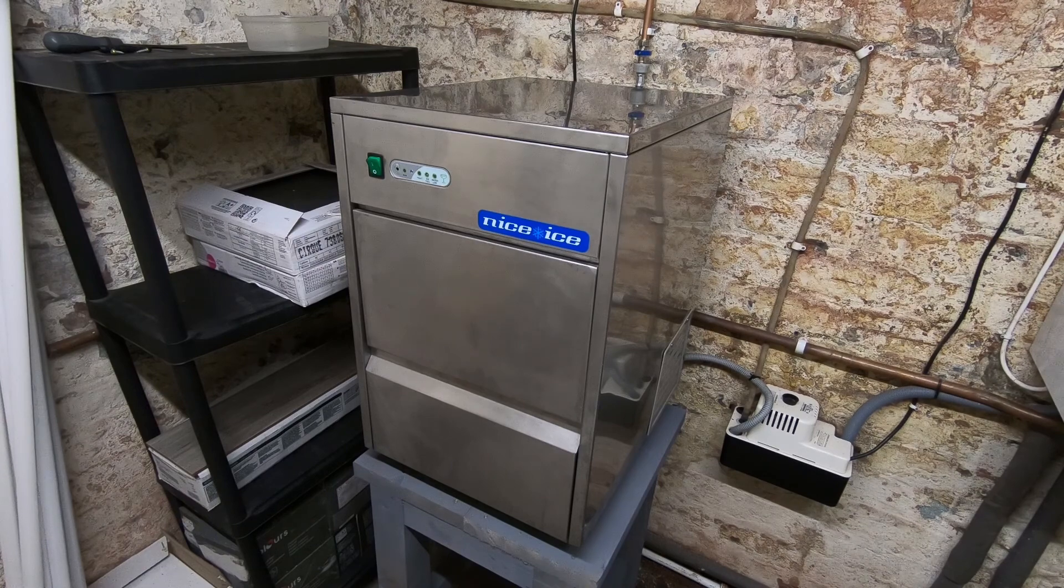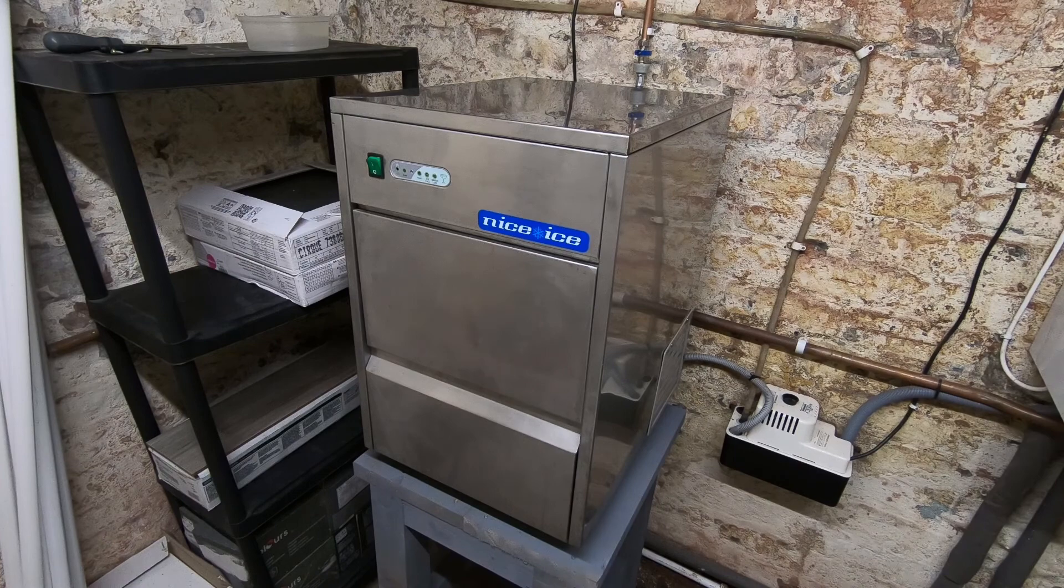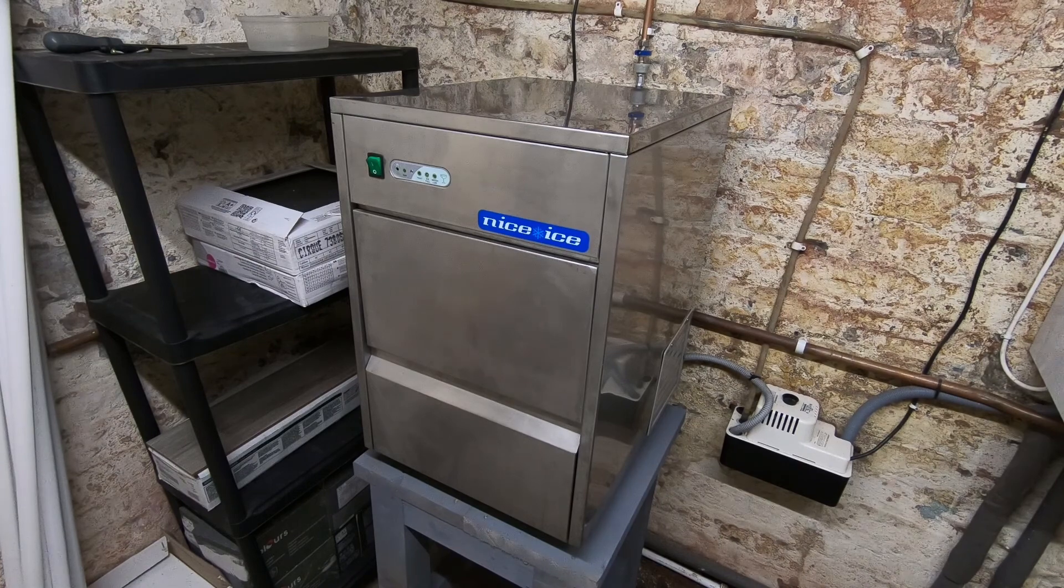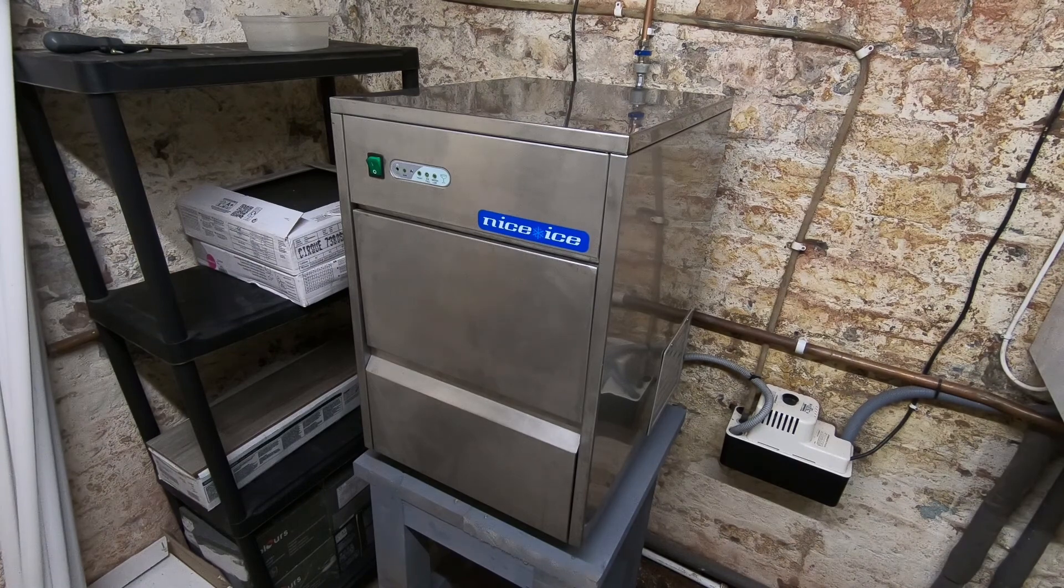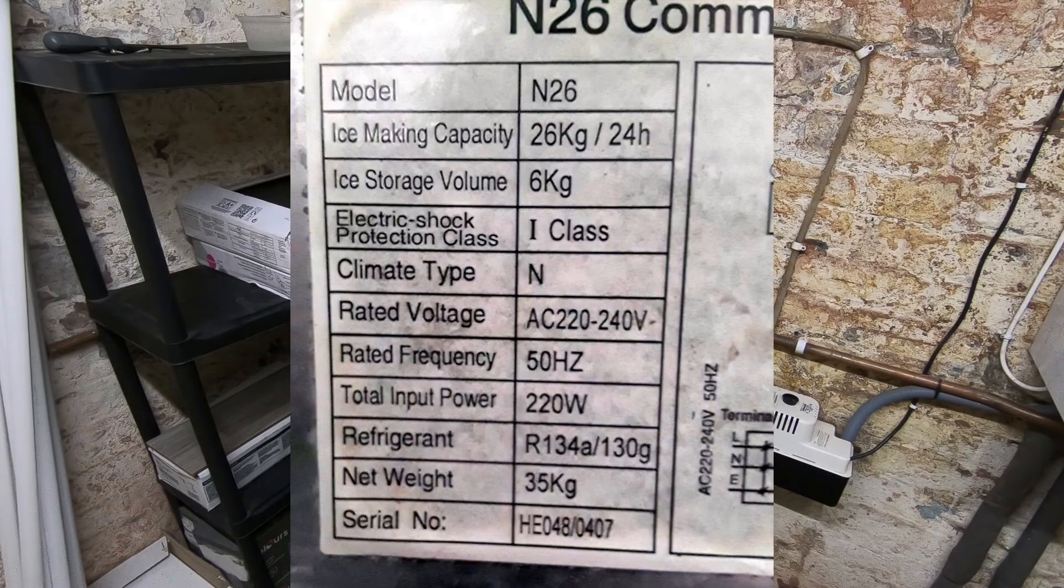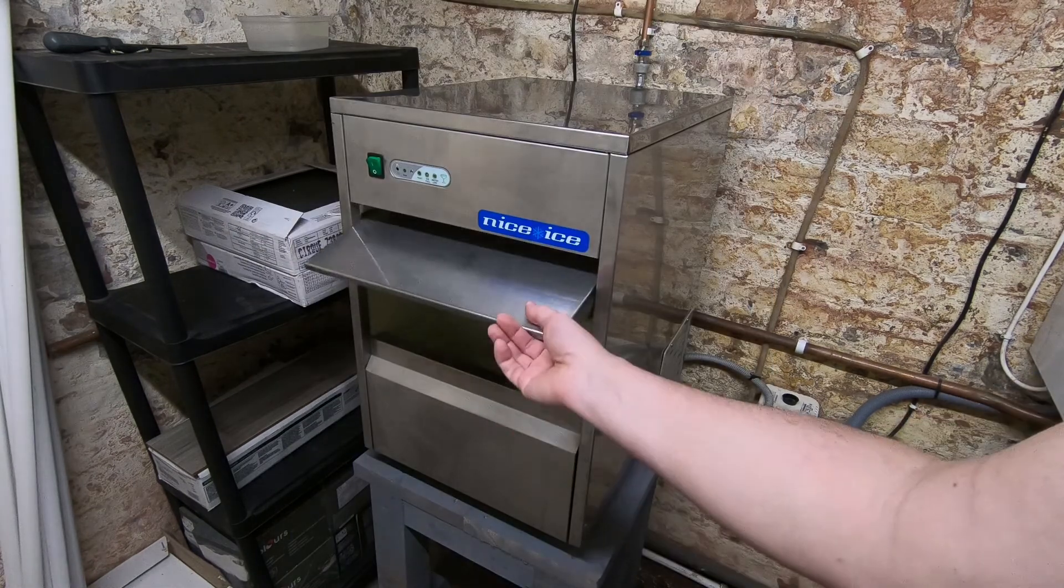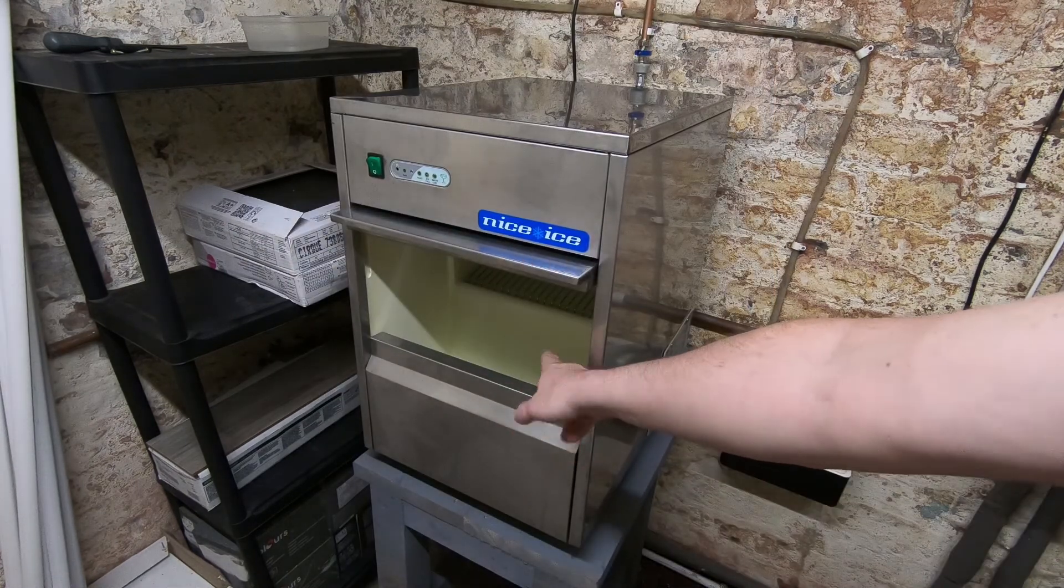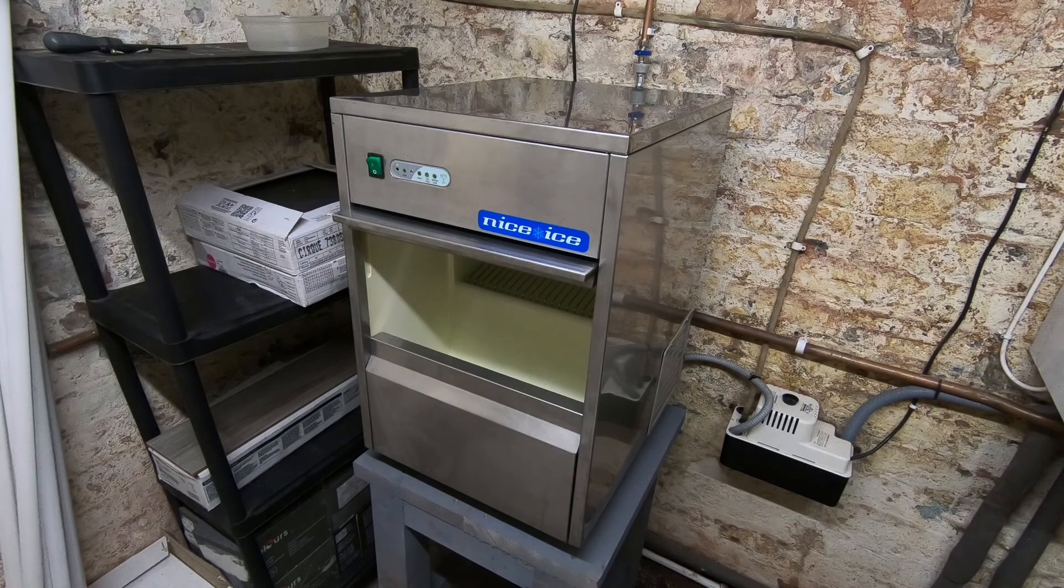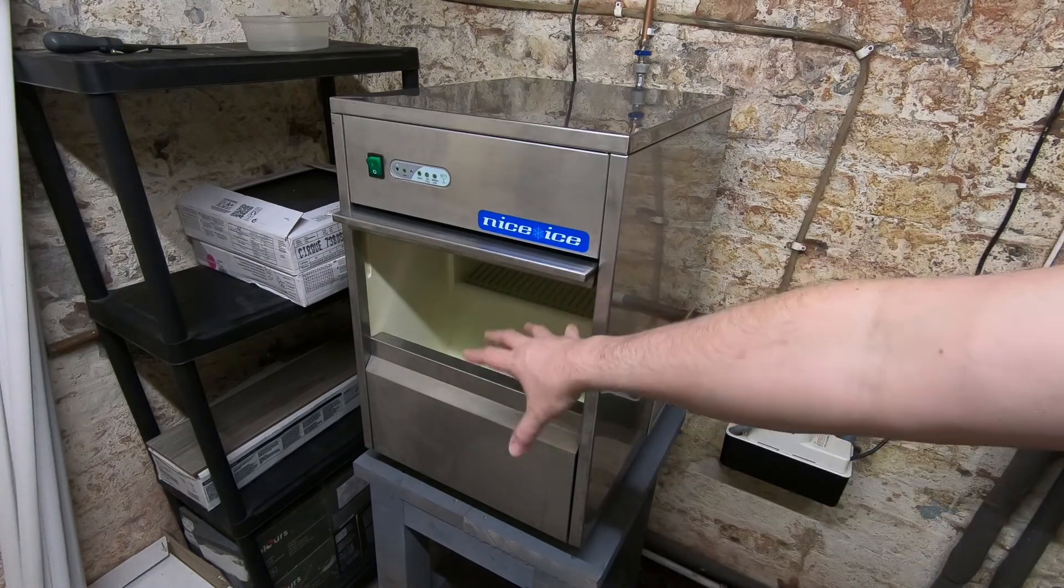There are a number of machines of the same type that look exactly the same, just different makes. This one is a Nice Ice model N26, and there are a few different models very similar to this. The ice is produced and ends up in this bin here. It holds six kilograms of ice and automatically stops when this bin is full.